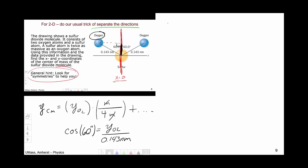can be determined from cosine of 60 degrees is going to be y_OL adjacent over the hypotenuse 0.143 nanometers. Which means y_OL is going to be 0.143 nanometers cosine of 60 degrees, which when I plug that into my calculator,